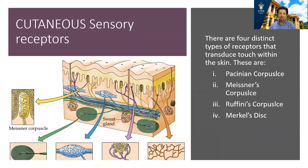There are four types of receptors in the skin that I want us to briefly look at. These four receptors are the Pacinian corpuscle, Meissner's corpuscle, Ruffini's corpuscle, and Merkel's disc. Let's look at the Pacinian first, which is a classic example of a sensory receptor within the skin.